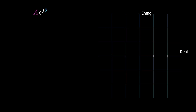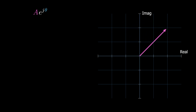A times e to the j-theta is the polar form of a complex number, represented in a complex plane as a vector with magnitude a and phase theta. Theta represents the phase angle — the angle of rotation in a complex plane. That complex number consists of real and imaginary parts. The real part is the projection of the magnitude on the real axis and is equal to the magnitude times cosine of theta.